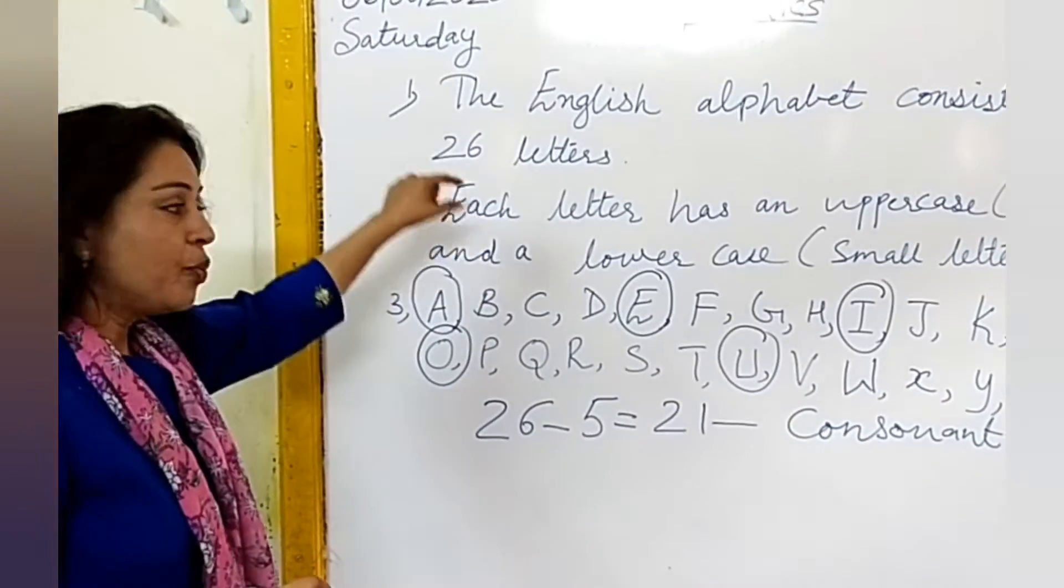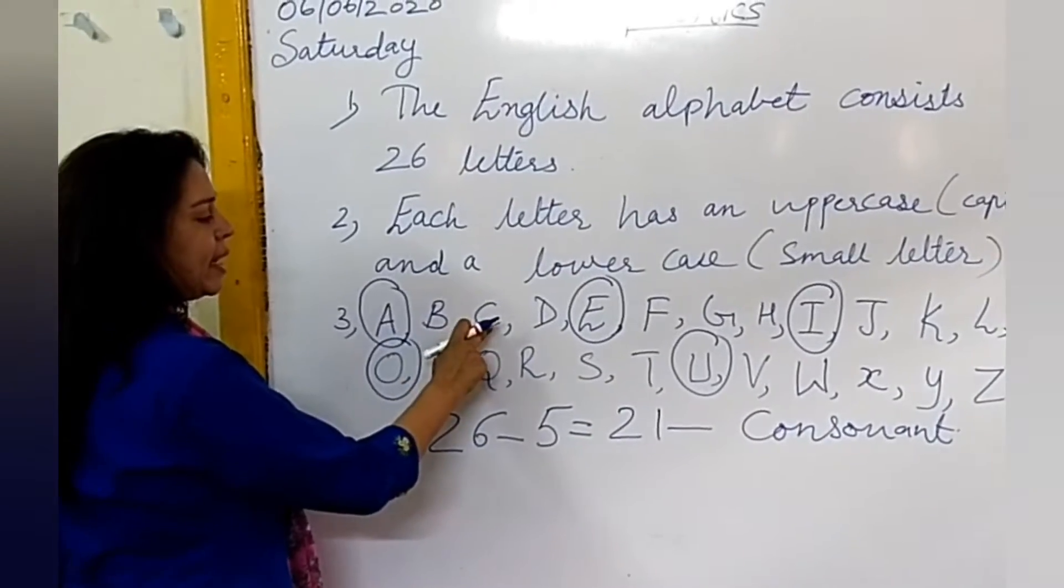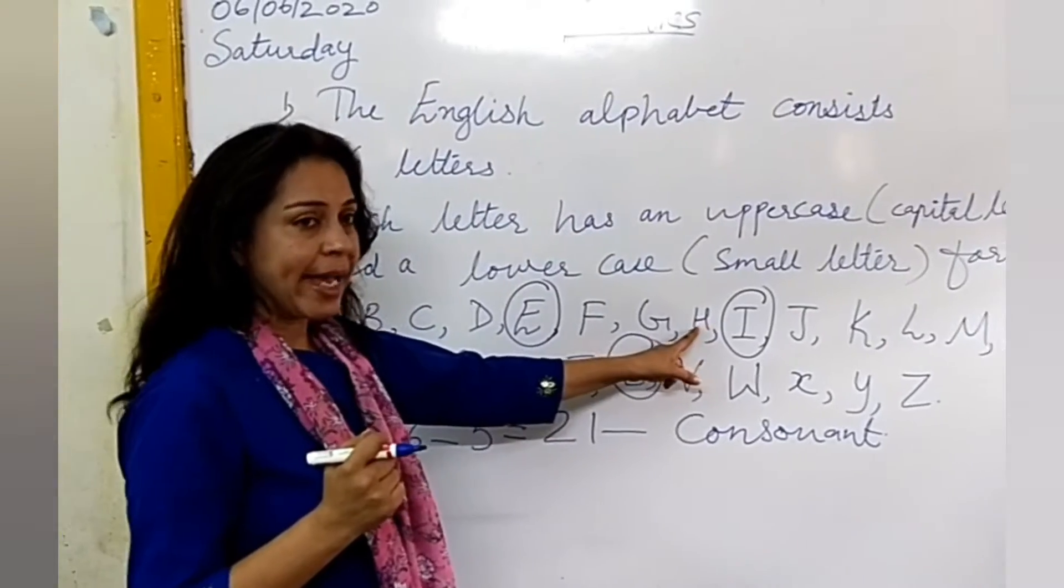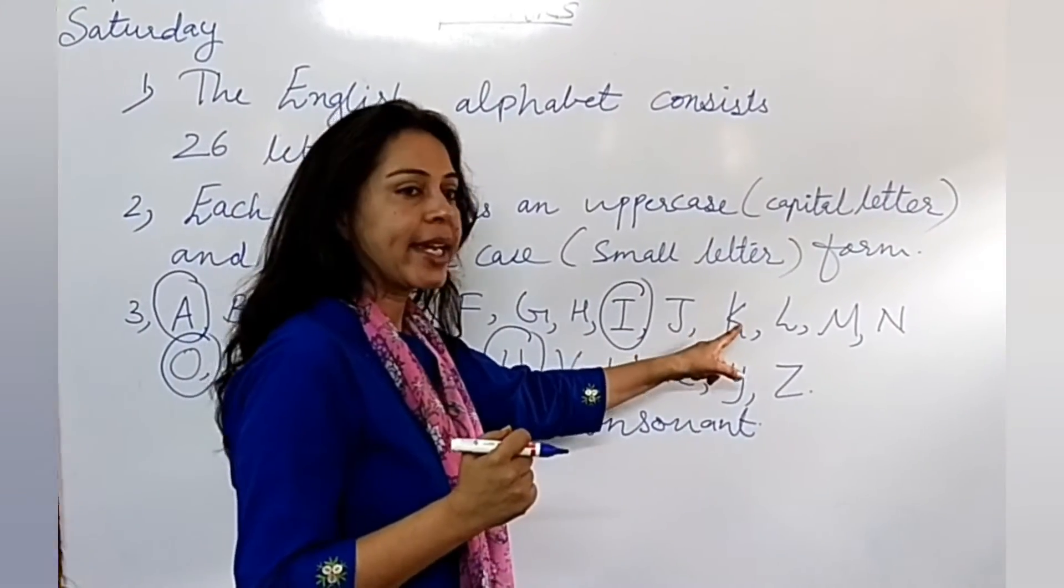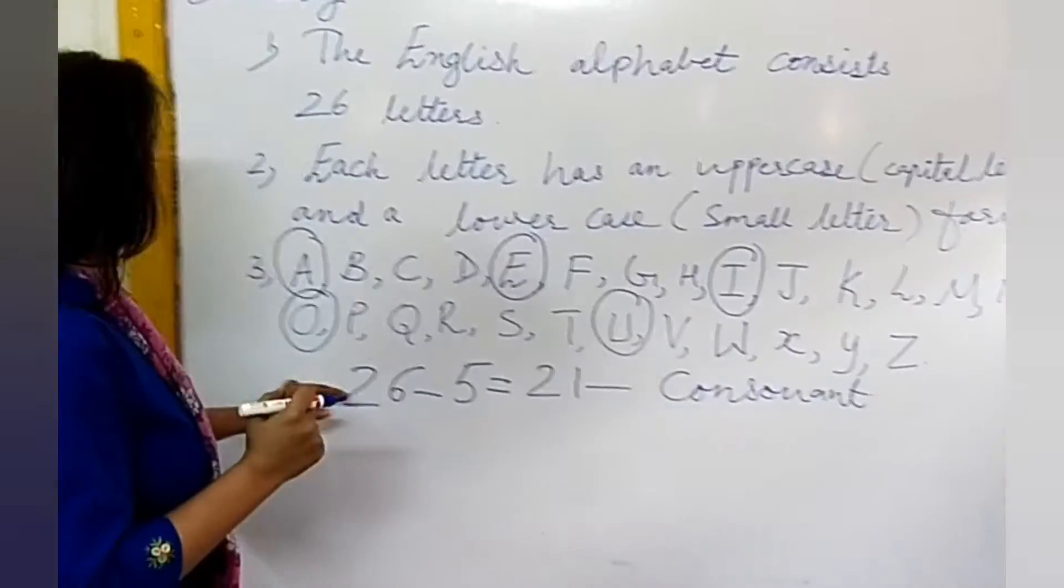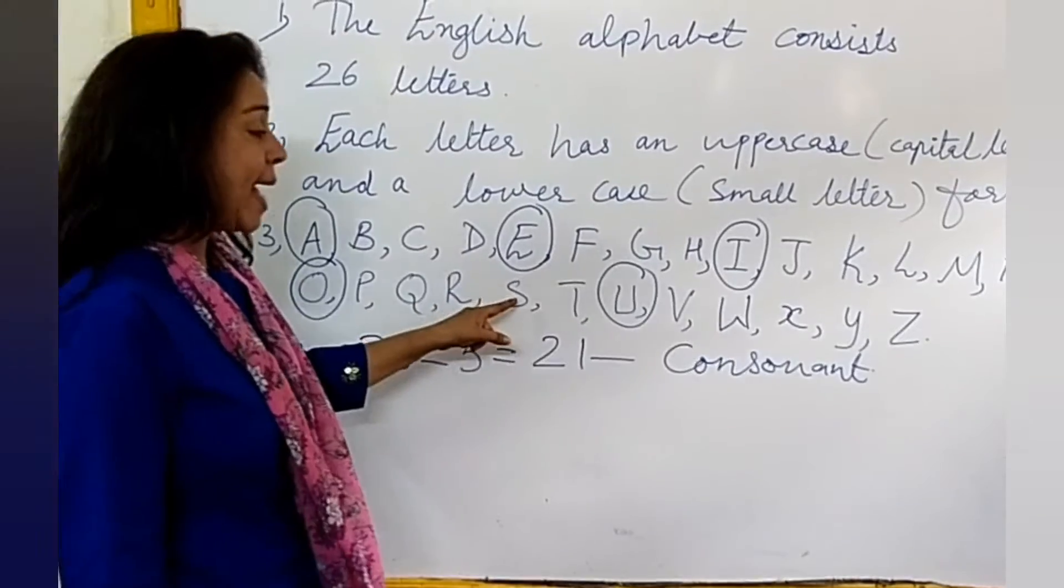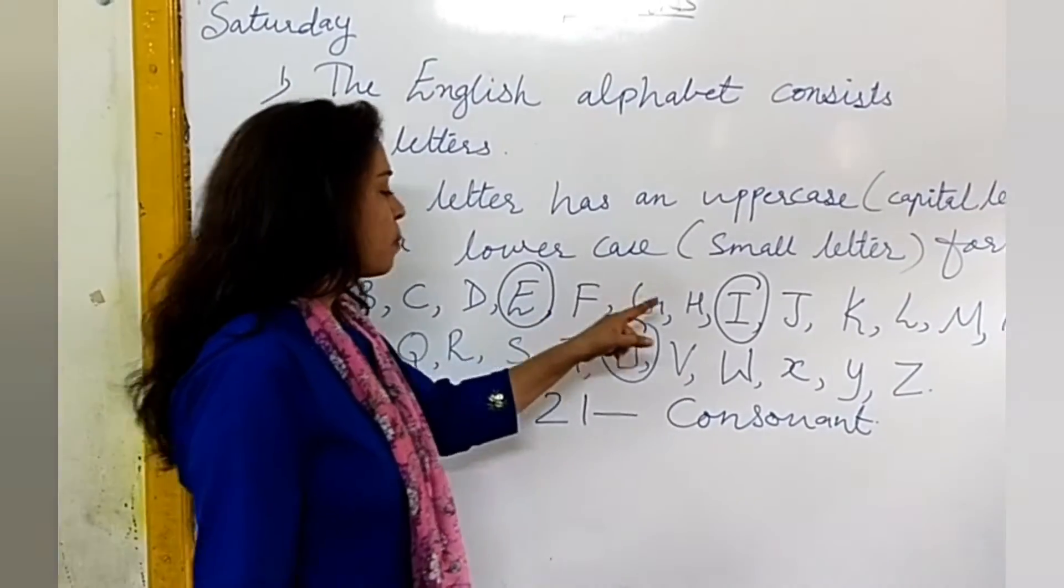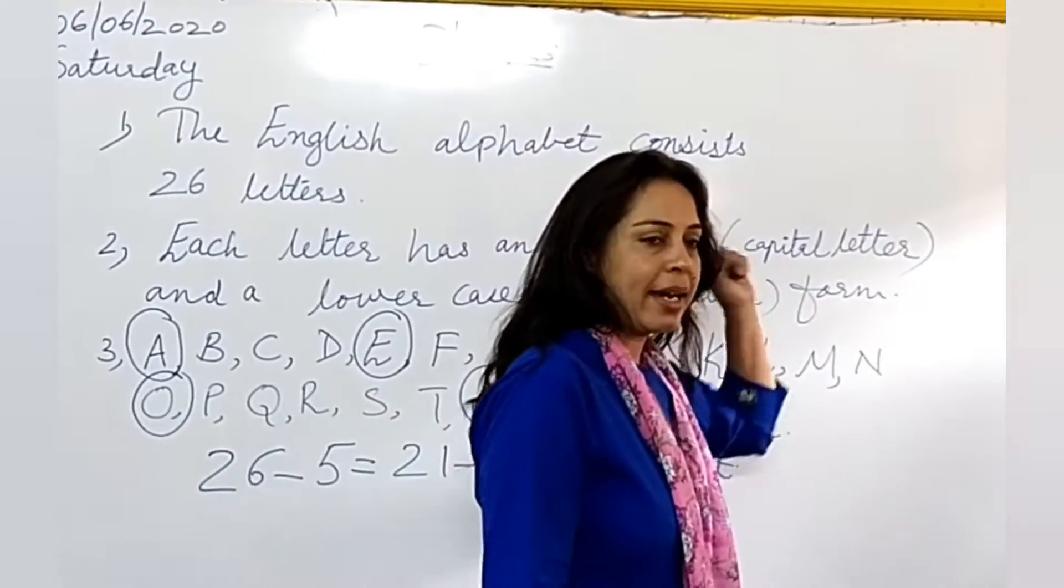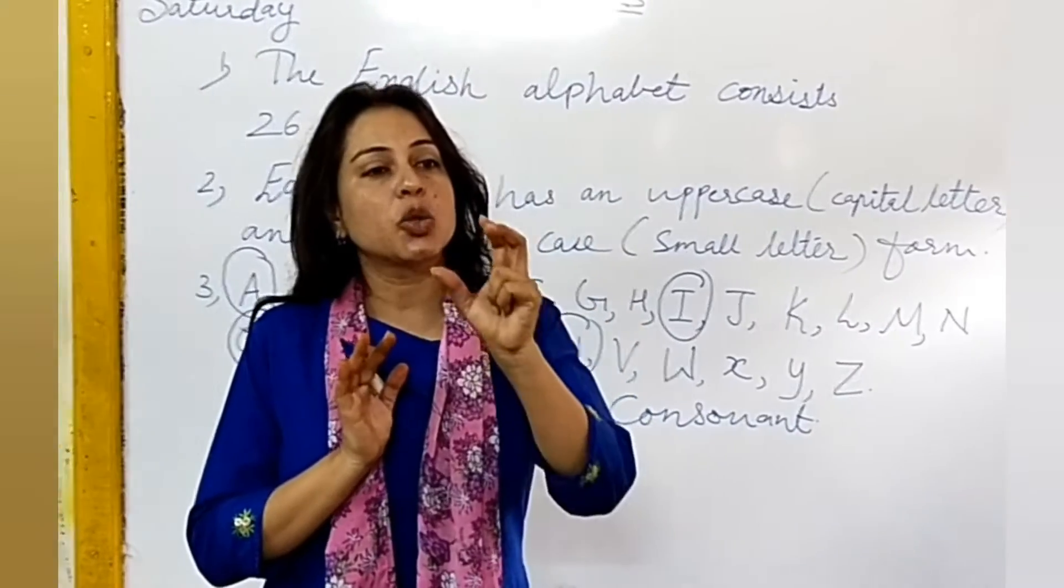We repeat these 21 consonants: B, C, D, F, G, H, J, K, L, M, N, P, Q, R, S, T, V, W, X, Y, Z. These are consonant sounds and these are 21 letters.